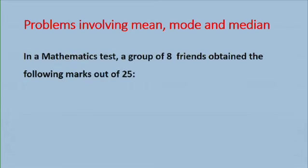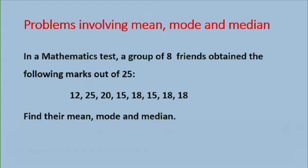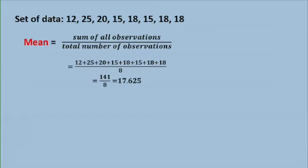Now let us look at a problem involving mean, mode, and median. In a mathematics test, a group of eight friends obtained the following marks out of 25. So here are the marks. Find the mean, mode, and median. So this was the given set of data. To find the mean, remember, we need to add all the observations divided by the total number of observations. So 12 + 25 + 20 + 15 + 18 + 15 + 18 + 18 divided by 8. That is 141 over 8, which gives us a mean of 17.625.